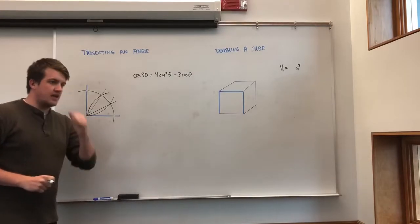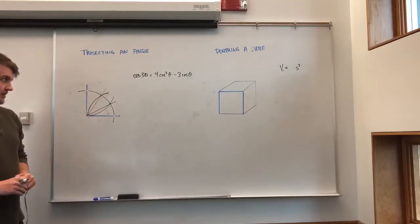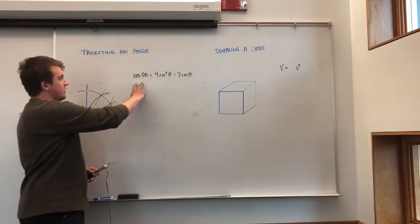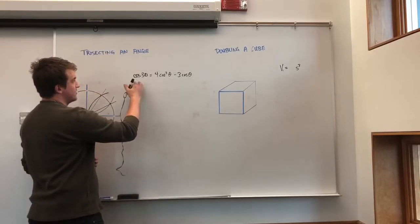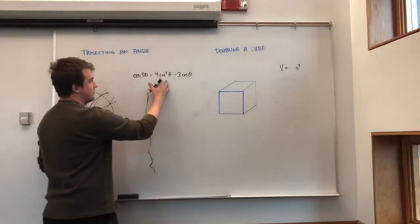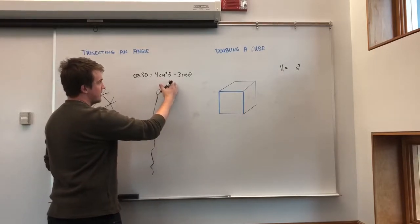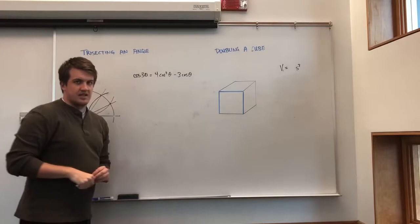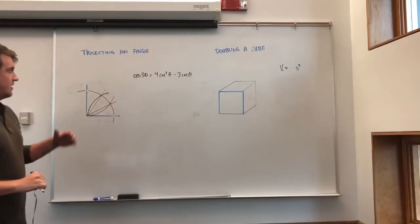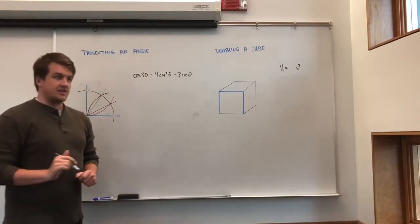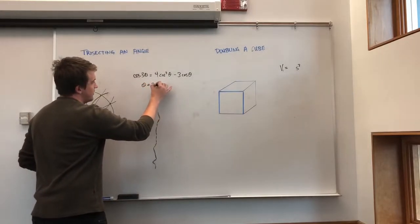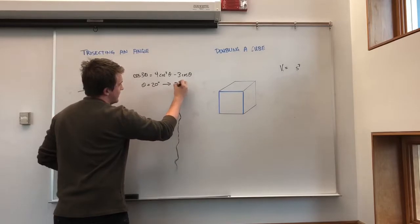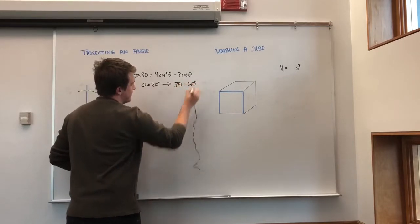Now, we will look at another angle more algebraically. So, if we look at the trigonometric identity of cosine of 3 theta equals 4 cosine cubed theta minus 3 cosine theta. So, let's look at the angle of 60 degrees. Let's make theta equal to 20 degrees, which would in turn make 3 theta equal to 60 degrees.